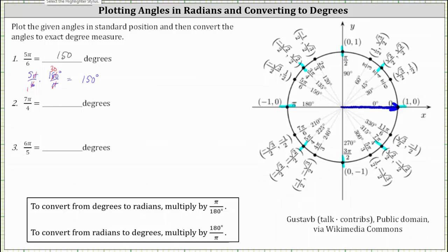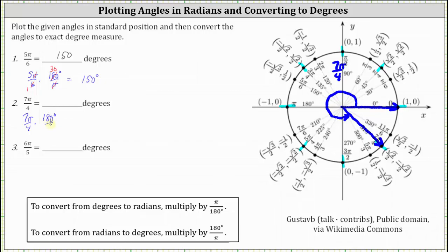Starting along the positive x-axis and rotating counterclockwise seven-fourth pi radians, we count one-fourth pi, two-fourths pi, three-fourths pi, four-fourths pi, five-fourths pi, six-fourths pi, and seven-fourths pi. This is seven-fourths pi radians in standard position. We can see from the circle it equals 315 degrees, but let's show that work.